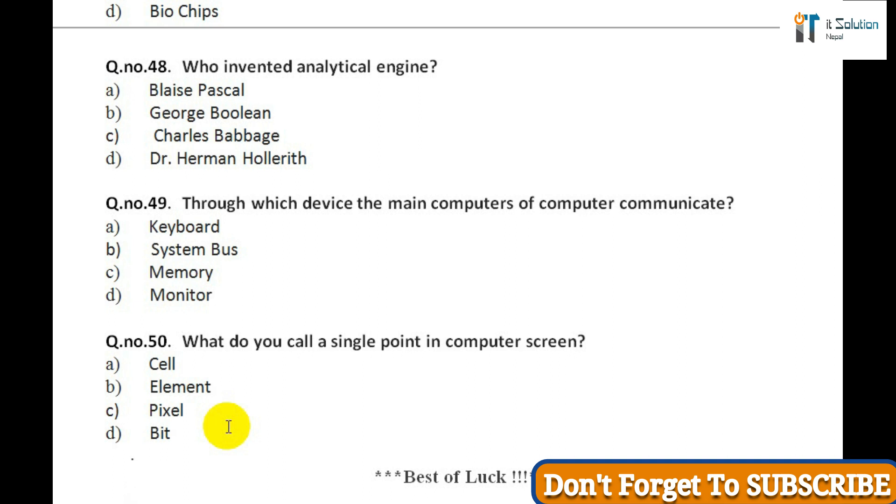Question forty-five: A set of flip-flops integrated together is called: A) Counter, B) Adder, C) Register, D) None of above. Question forty-six: Which of the following have fastest access time? A) Magnetic disk, B) Semiconductor memories, C) Magnetic tape, D) Compact disc. Question forty-seven: The second generation computer was based on: A) Vacuum tube, B) Silicon chips, C) Transistor, D) Bio chips. Question forty-eight: Who invented analytical engine? A) Blaise Pascal, B) George Boolean, C) Charles Babbage, D) Dr. Herman Hollerith.